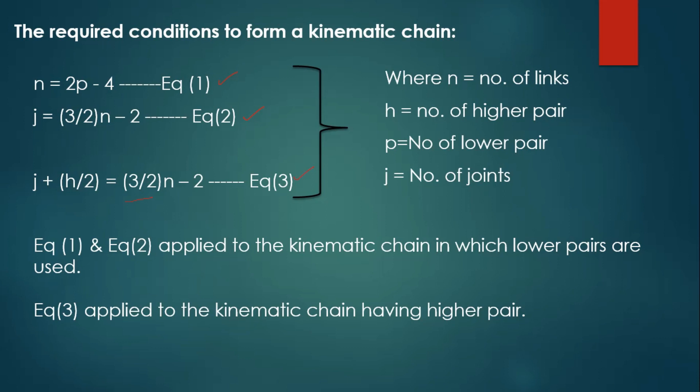These three equations give the conditions to form a kinematic chain, where n = number of links, h = number of higher pairs, p = number of lower pairs, and j = number of joints. The first two equations apply to kinematic chains having only lower pairs, whereas Equation 3 applies to chains having higher pairs.